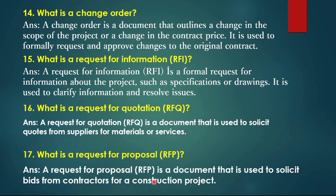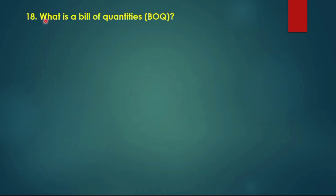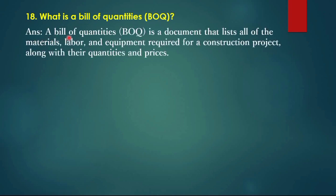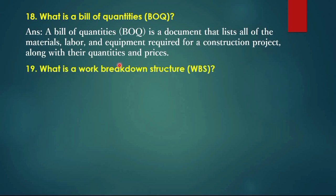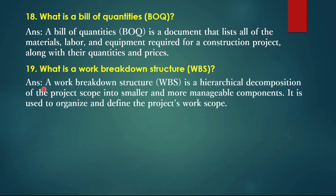Question 17: What is a request for proposal (RFP)? An RFP is a document used to solicit bids from contractors for a construction project. Question 18: What is a bill of quantities (BOQ)? A BOQ is a document that lists all of the materials, labor, and equipment required for a construction project, along with their quantities and prices.